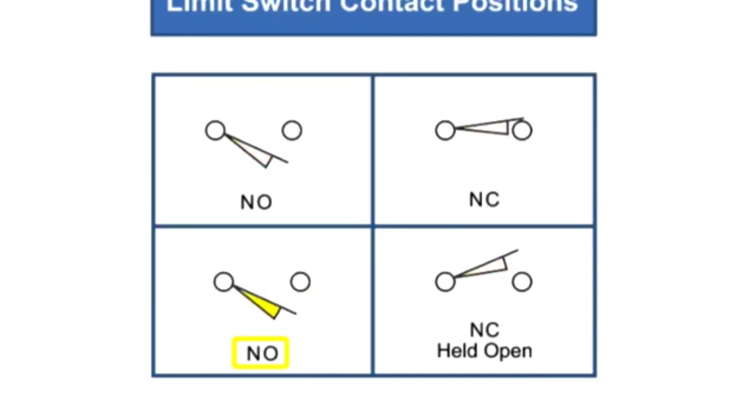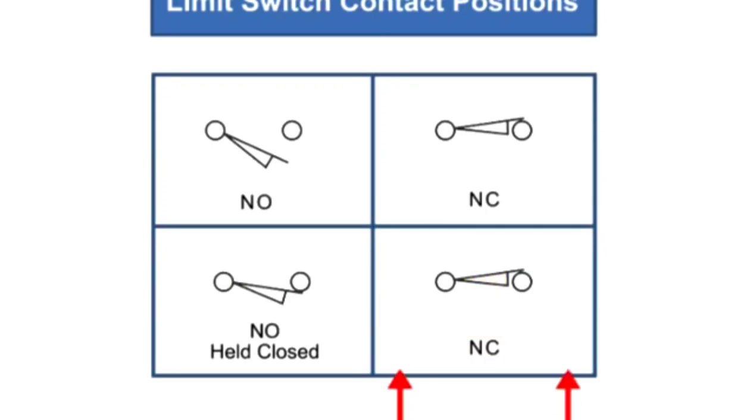A normally open limit switch will remain open until the actuator is acted upon by an outside force or object, thus holding it closed. A normally closed limit switch will remain closed until an outside force or object holds it open.